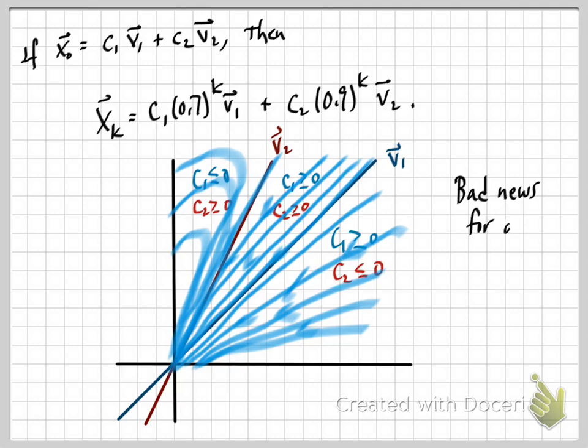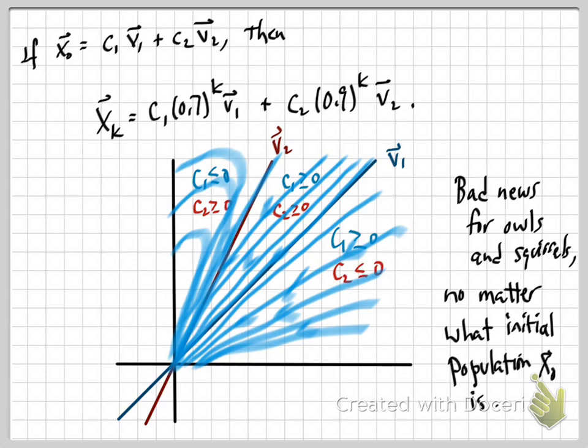This is bad news for our owls and squirrels. It tells us no matter what the initial condition is, the initial condition is going to correspond to some point in this first quadrant. No matter what the initial population is, eventually the squirrels and the owls are going to die out.